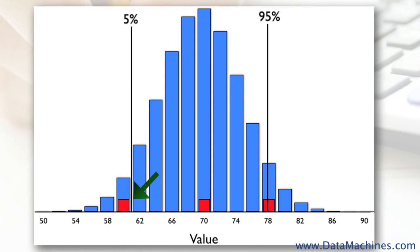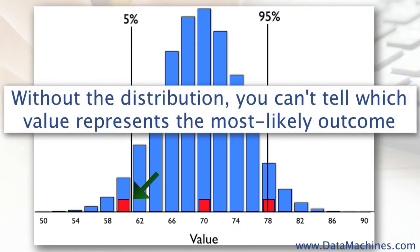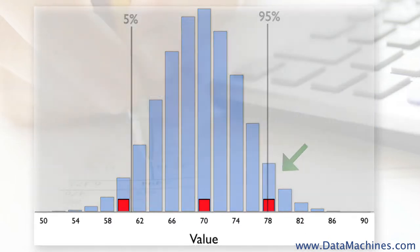So the key is to see the entire distribution of potential outcomes, so that you can understand the probabilistic value of your project and portfolio value estimates. Without this understanding, you have no way of telling which of these values represents the most likely outcome, or being able to improve your project management system.